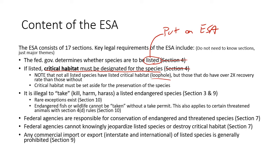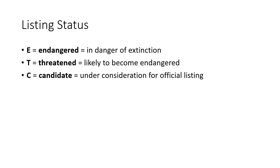The conservation status on the Endangered Species Act is simpler than the IUCN Red List. E stands for endangered — in danger of extinction. T stands for threatened — likely to become endangered. C stands for candidate — under consideration for official listing.